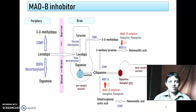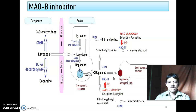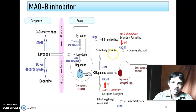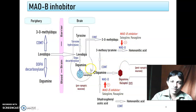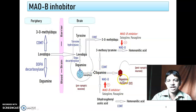Next is the MAO-B inhibitor, like selegiline. These drugs go inside the brain and inhibit MAO-B. By inhibiting MAO-B, the breakdown of dopamine is inhibited, resulting in less breakdown and more dopamine available to act on the dopamine receptor — specifically the D2 receptor.